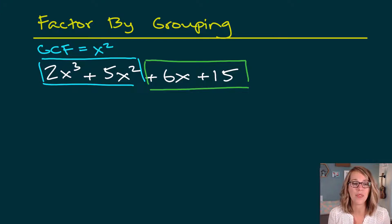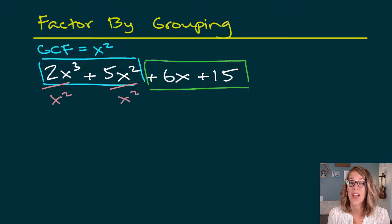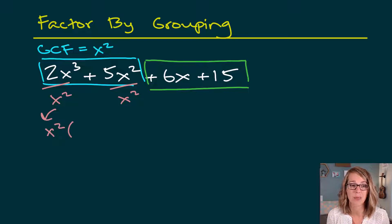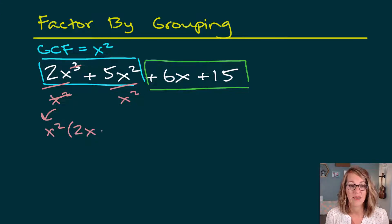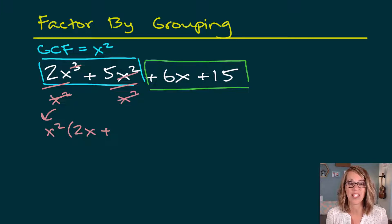I'm going to divide both of these terms by x squared, factoring it out in front. x squared goes into x cubed and leaves a single x — there were three x's, we canceled two of them. Then x squared over x squared cancels completely, leaving plus 5.